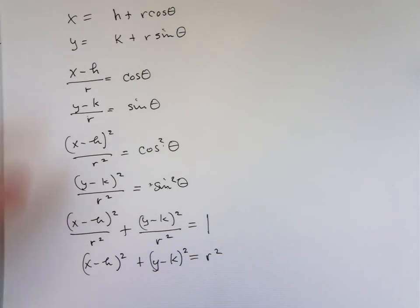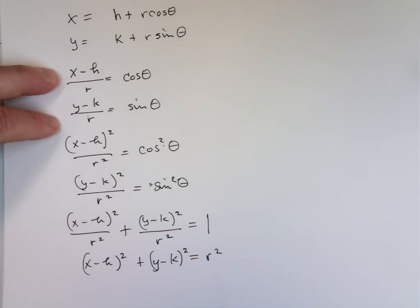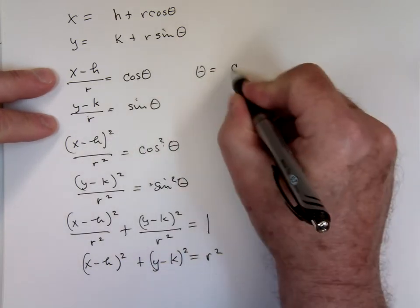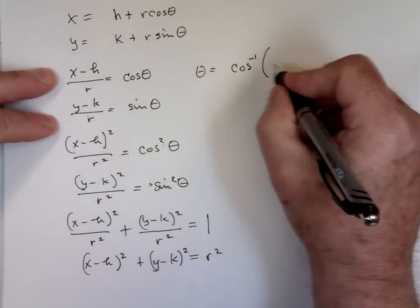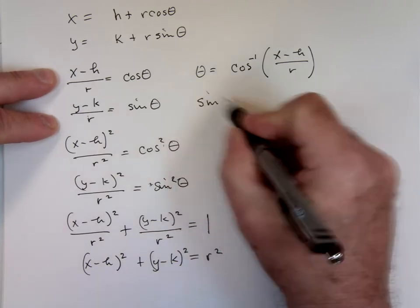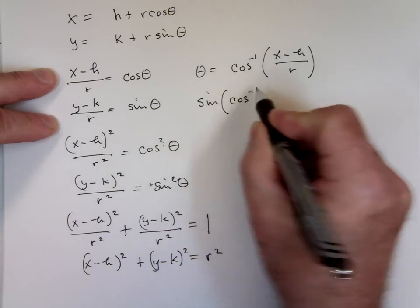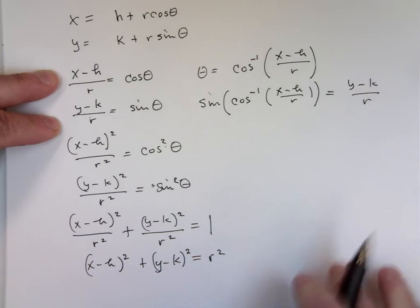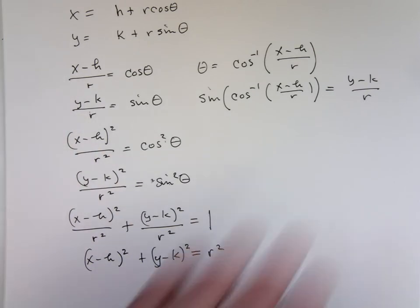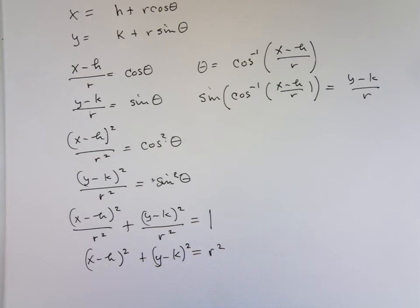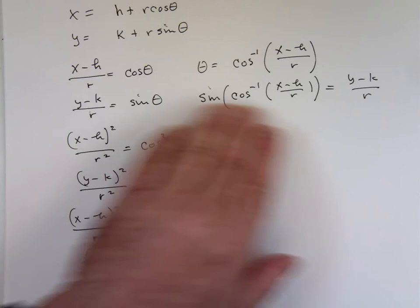I'm going to show you how to use that right triangle technique, because we need that occasionally. If you actually solve for theta, you get theta equals the inverse cosine of X minus H over R. Now we have the sine of theta — what's theta? It's the inverse cosine of X minus H over R, equal to Y minus K over R. Well, we've eliminated the parameter, but this is not a useful form at all. We have to simplify, and the way to simplify is to use a right triangle.